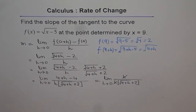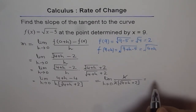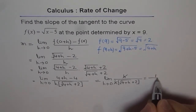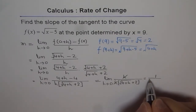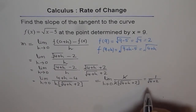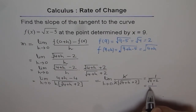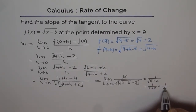Now h and h cancel out. Once canceled, we substitute h = 0 to calculate the answer. We get 1 over [√(4 + 0) + 2] = 1 over [√4 + 2] = 1 over [2 + 2] = 1 over 4.